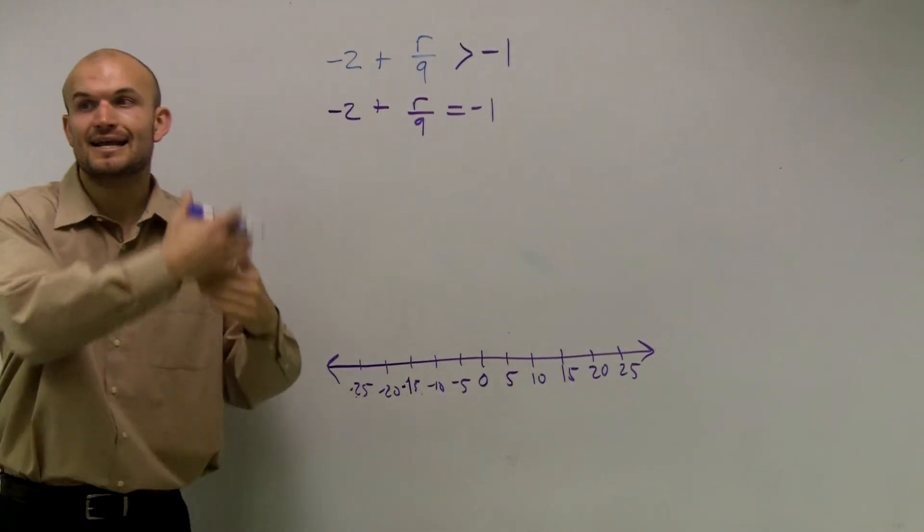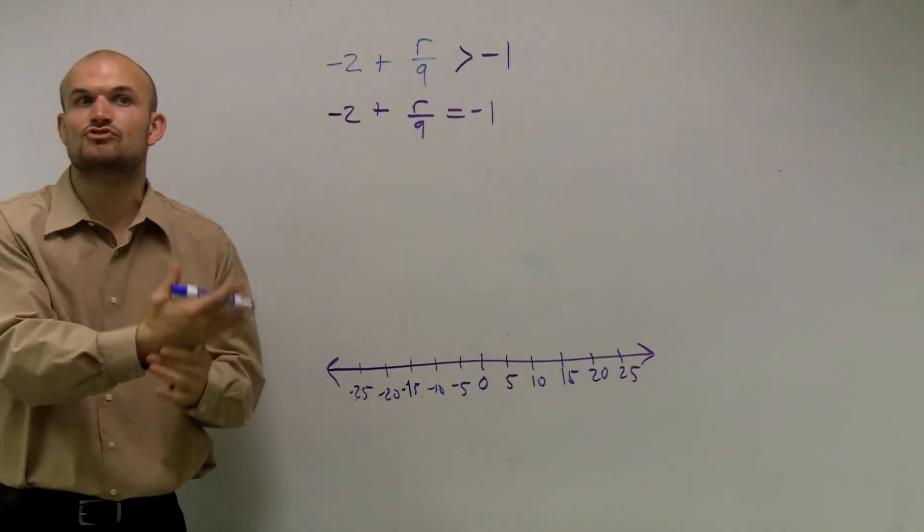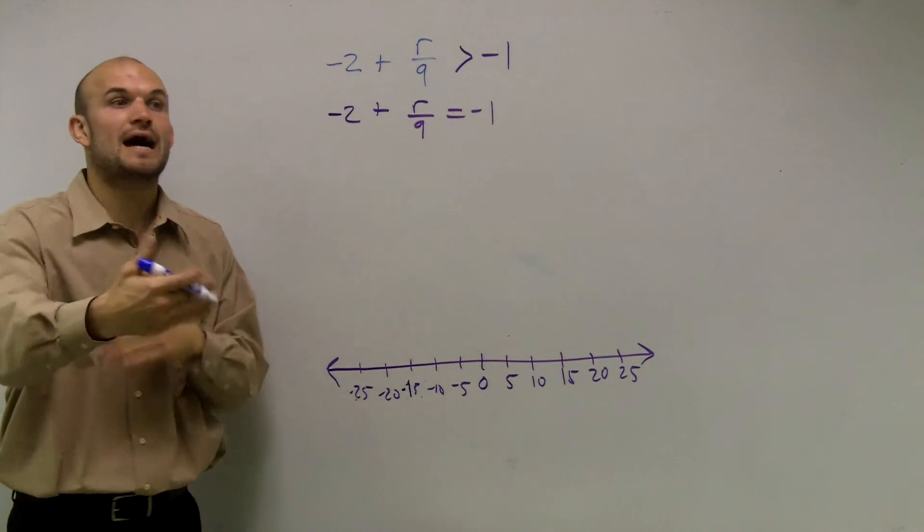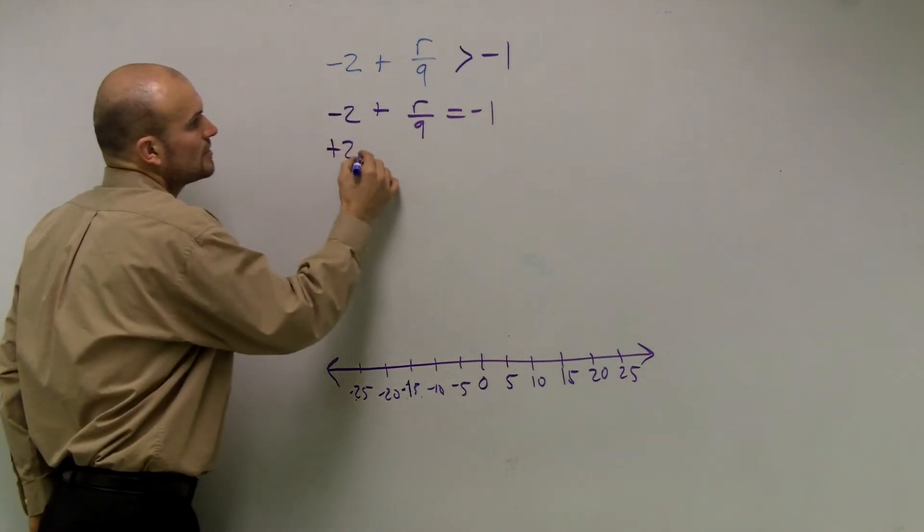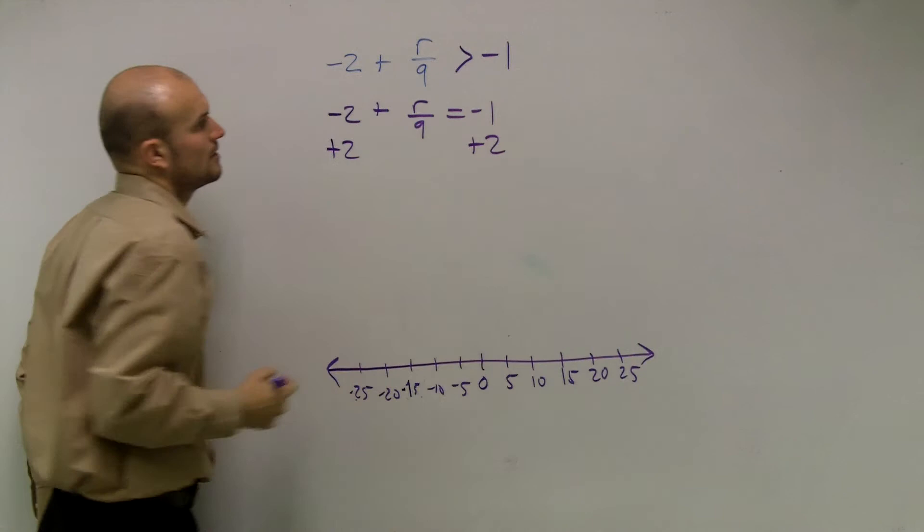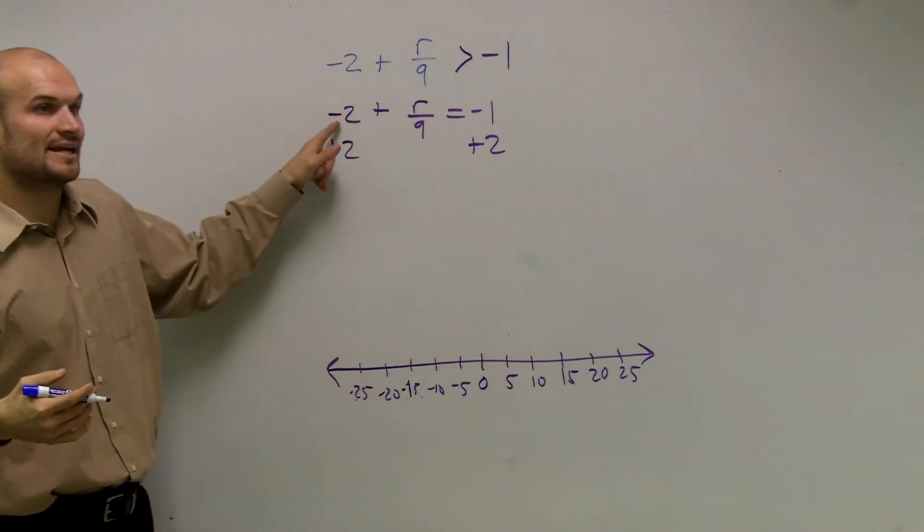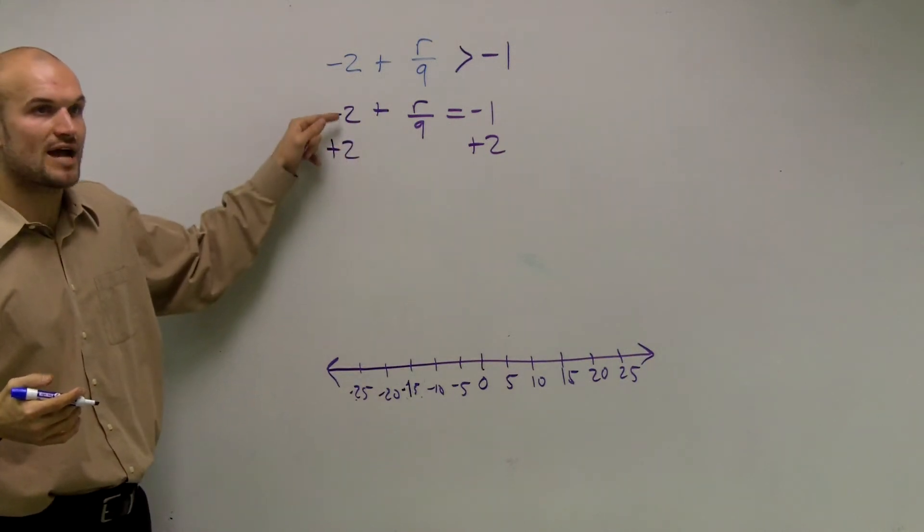Now, since you're adding a negative, that's the same thing as subtracting, right? So to do the opposite of subtracting, I need to add a 2 to both sides. Remember, I'm adding a negative number. That's the same thing as subtraction.